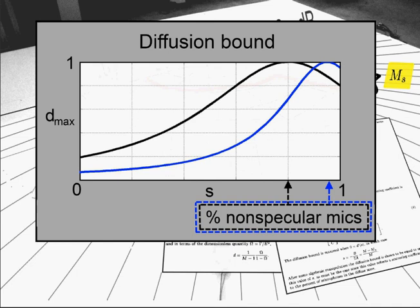If this proportion of non-specular mics is changed, then the diffusion bound changes in turn. This dependence on specular zone width is a property of diffusion measurement, and since it is here to stay, it's just something we have to live with.